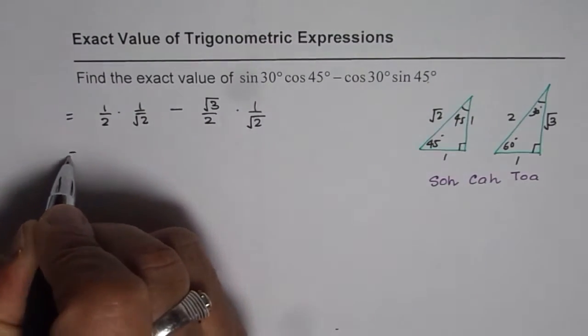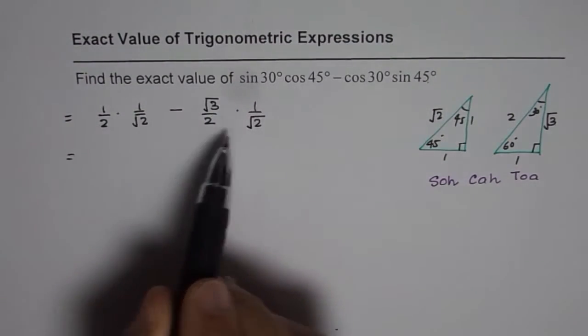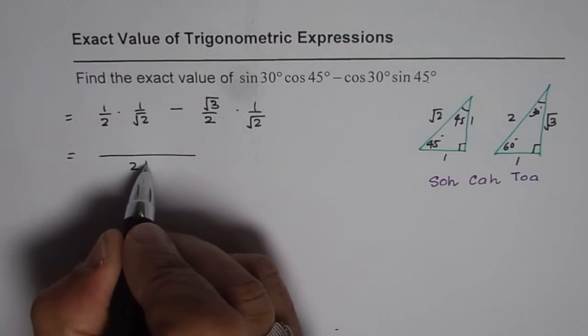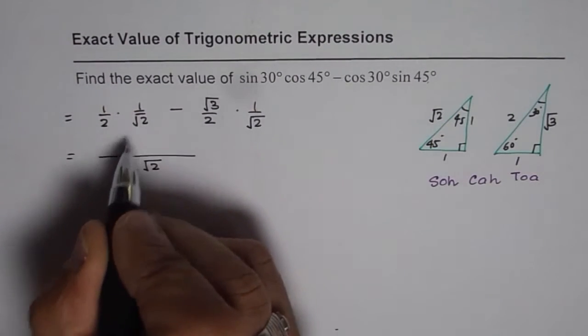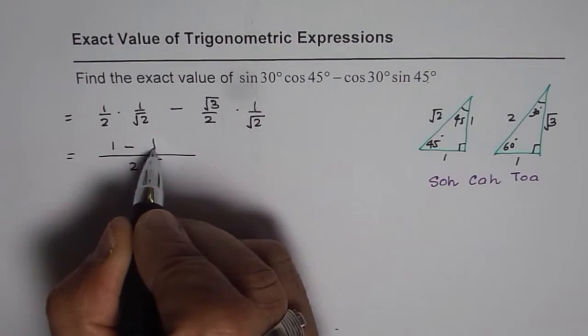Now we can solve this. Here we have 2 square root 2 as common denominator. The numerator is 1 minus square root 3.